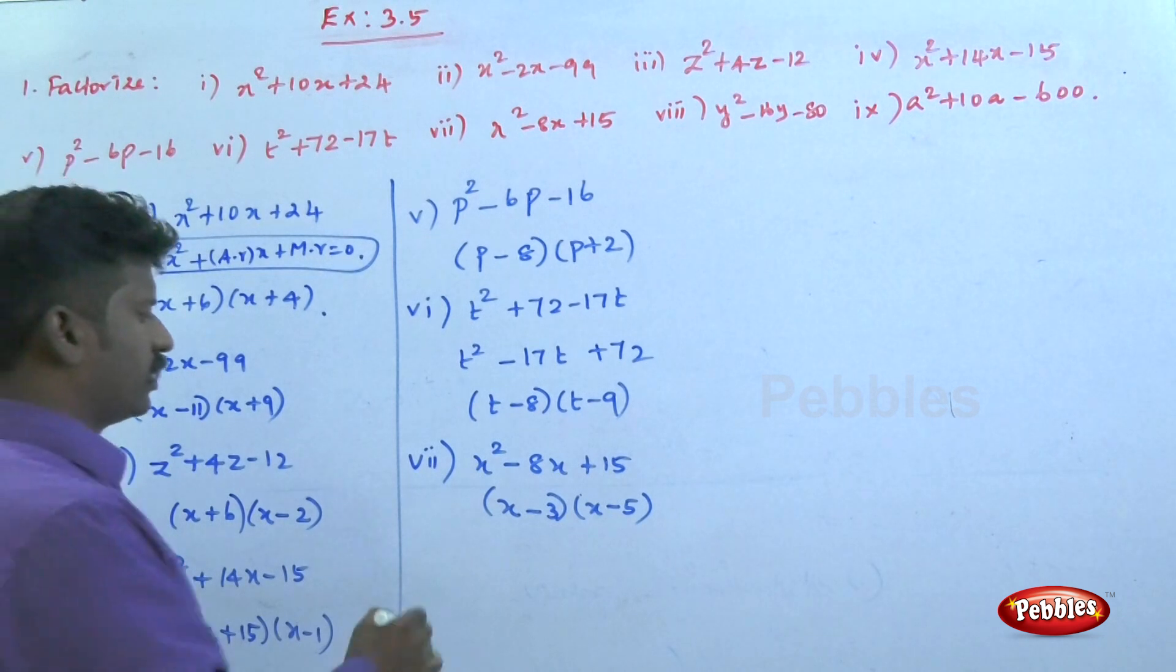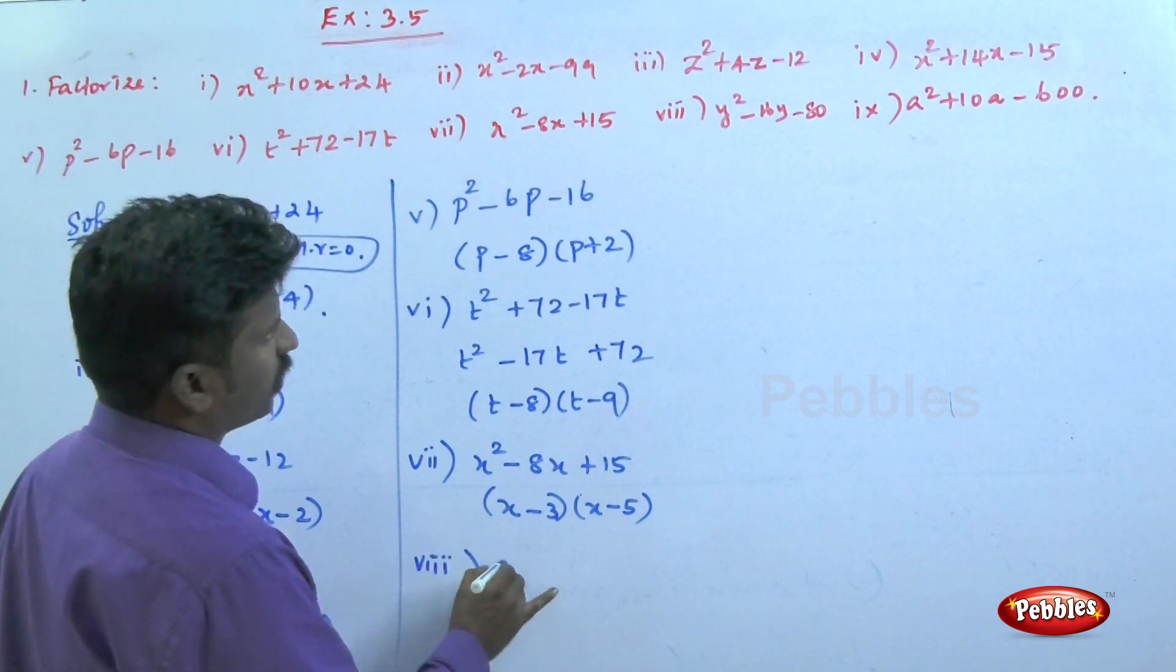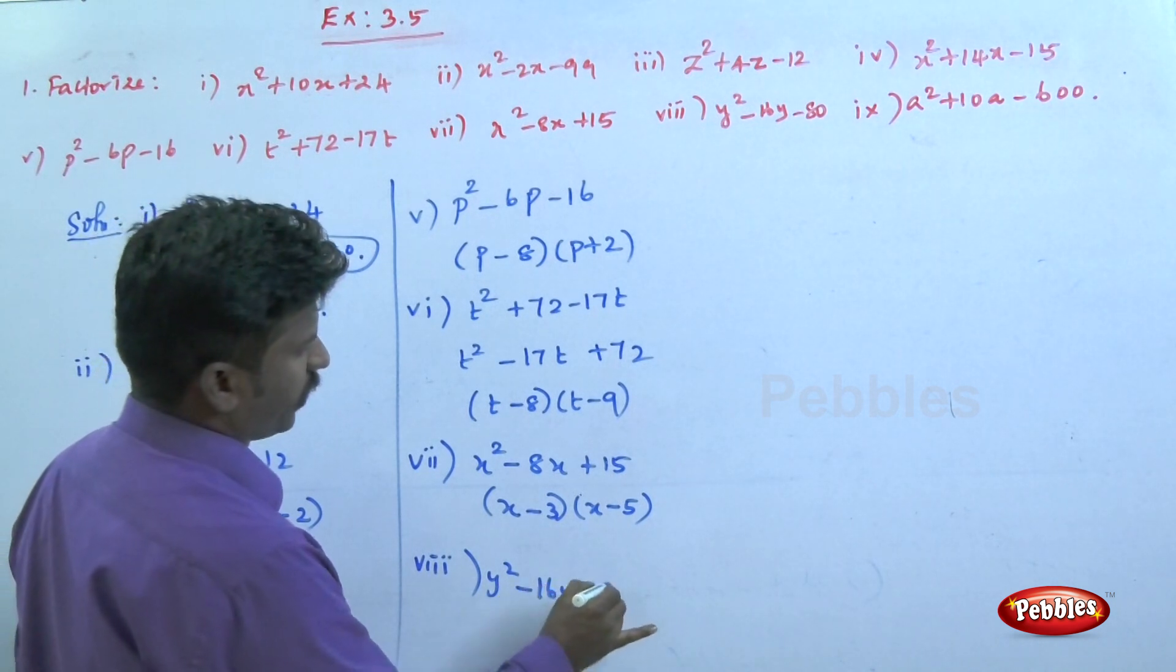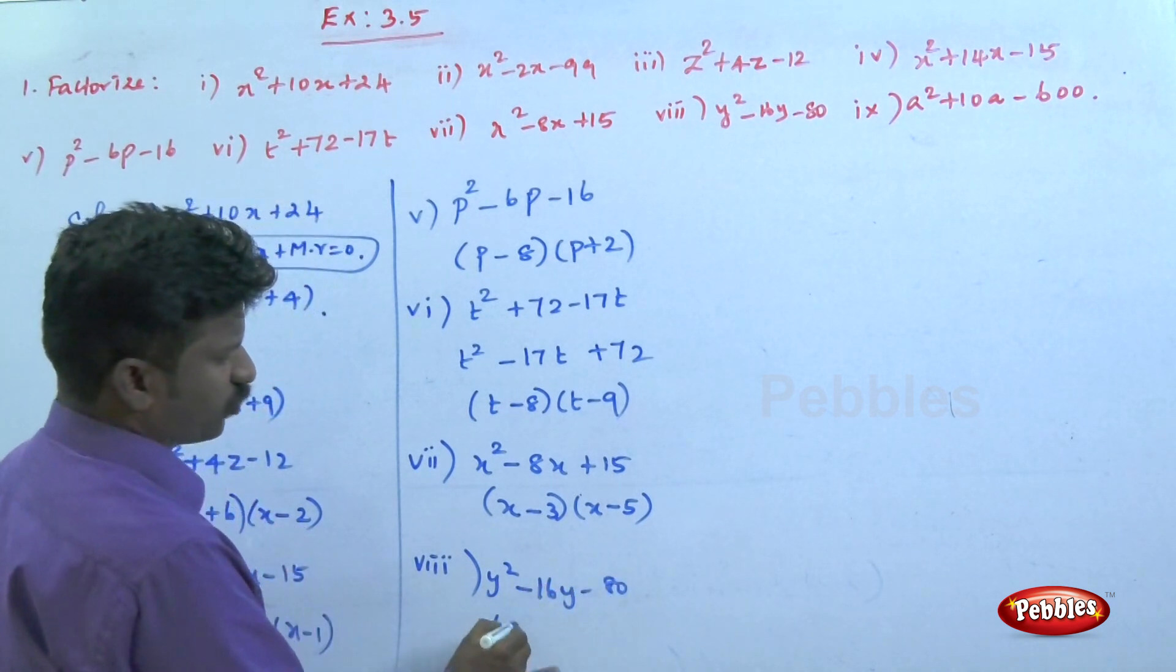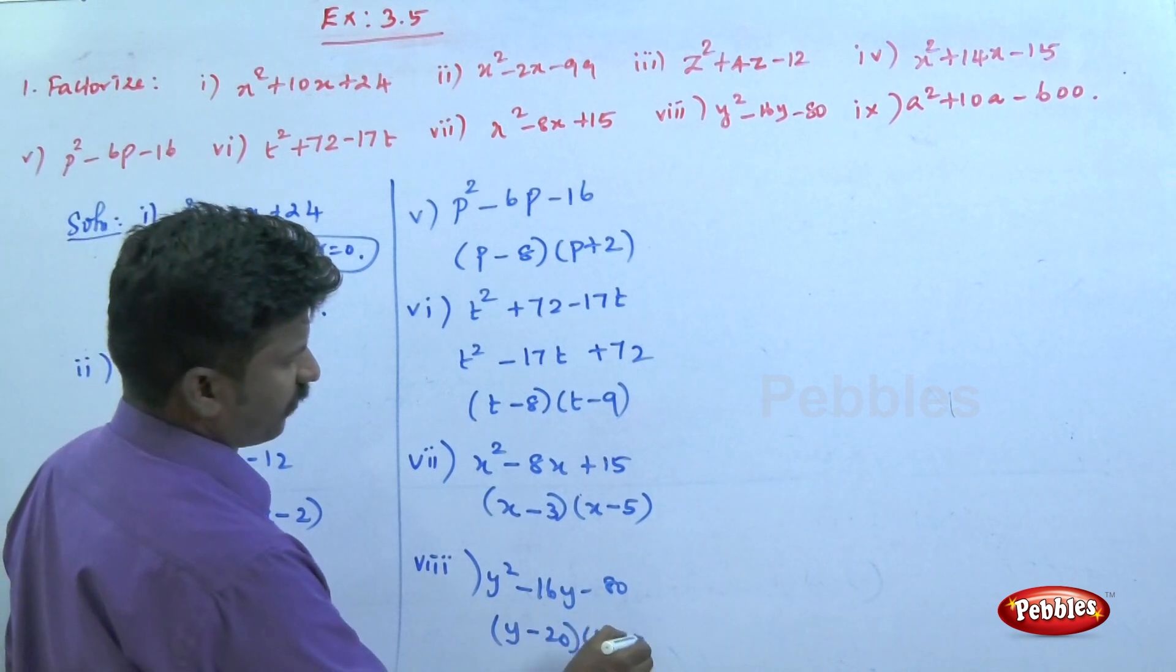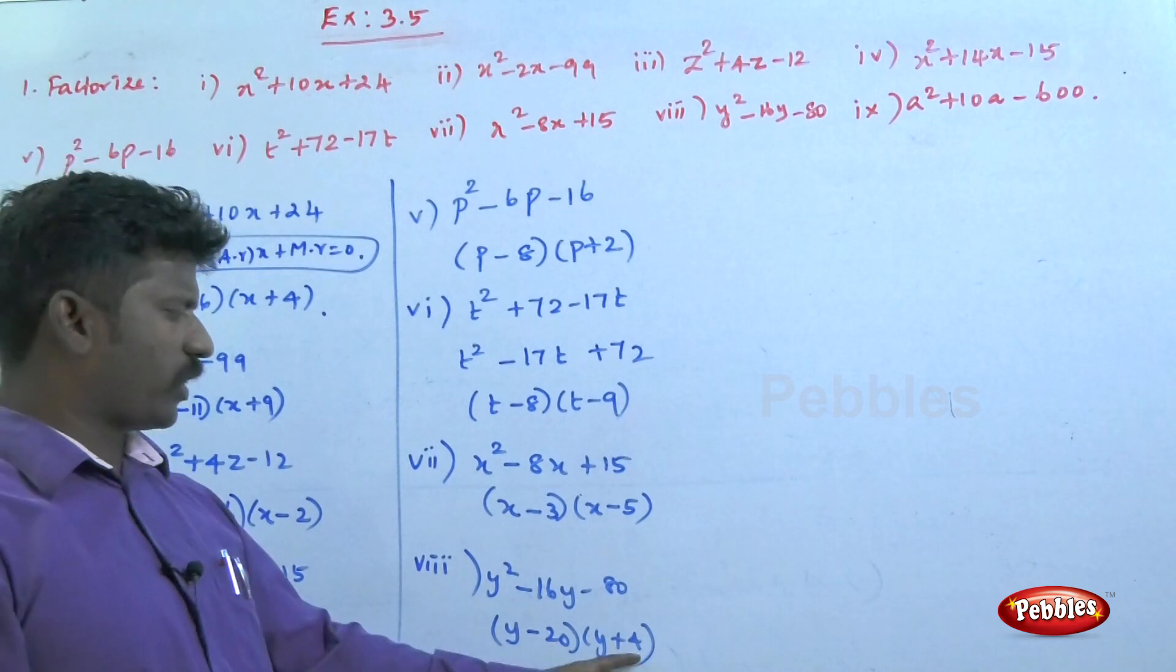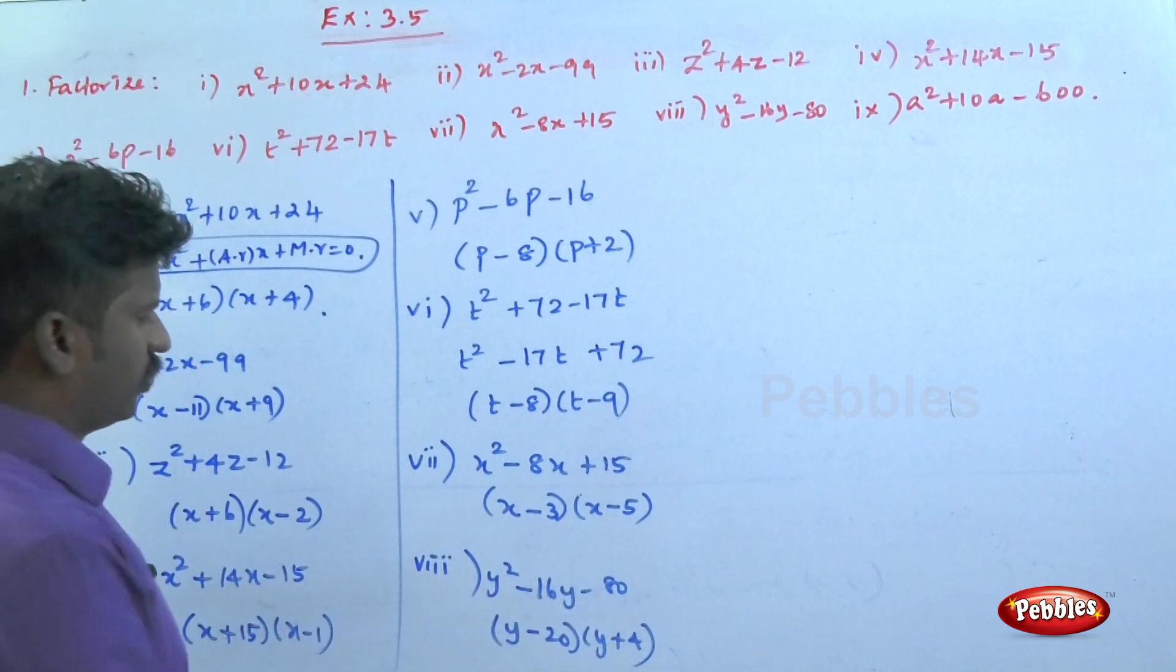Question number eight: y² - 16y - 80. This is (y - 20)(y + 4). -20 + 4 = -16, the product is -80.